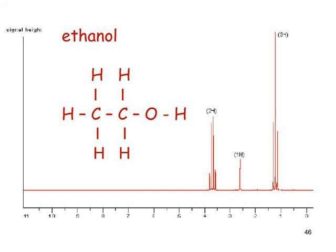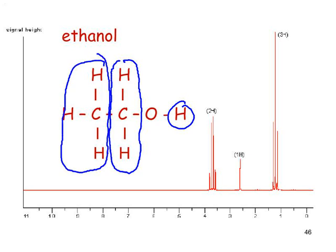Ethanol is next. There are six protons but three types — given away by three peaks: methylene protons, methyl protons, and the OH. Interestingly, it may surprise you that the hydrogen directly attached to the O isn't the furthest down field — in fact the methylene protons are furthest down field.